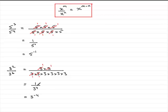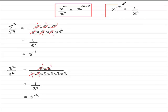So hopefully you can see a connection: 5 to the minus 1 is 1 over 5, and 3 to the minus 4 is 1 over 3 to the power 4. In general, x to the power minus n is the same as 1 over x to the power n. This is something I'd encourage you to remember — it's really just a spin-off of the division rule, as you can see through these examples.